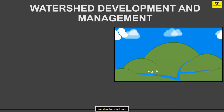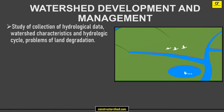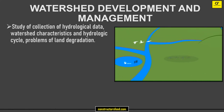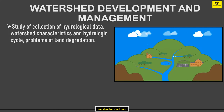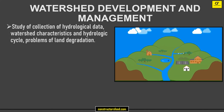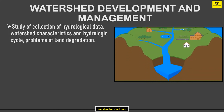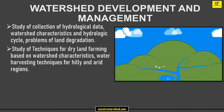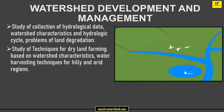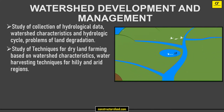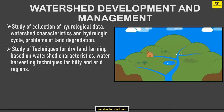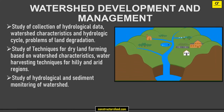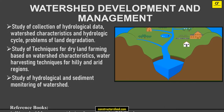Watershed Development and Management: Study of Collection of Hydrological Data, Watershed Characteristics and Hydrologic Cycle, Problems of Land Degradation, Study of Techniques for Dry Land Farming Based on Watershed Characteristics, Water Harvesting Techniques for Hilly and Arid Regions, and Study of Hydrological and Sediment Monitoring of Watershed. These are the reference books.